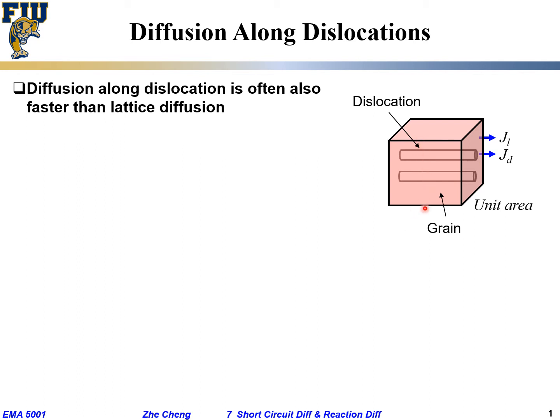Let's for simplicity assume that flux through L for lattice, as well as flux through D for dislocation.